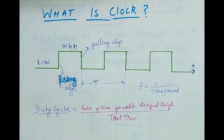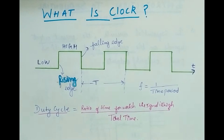In the previous lecture I discussed about the introduction of the sequential circuit. As you know, a sequential circuit is a circuit in which the present output depends upon the present input as well as on the past outputs. So whenever we are giving any input to the sequential circuit, it needs the present input as well as the past outputs.